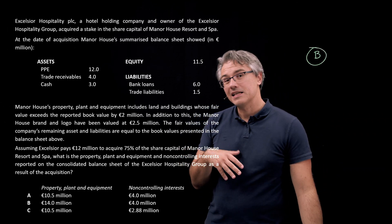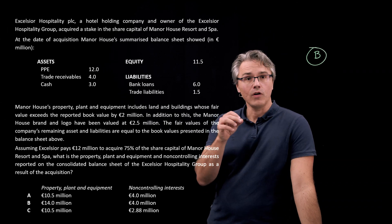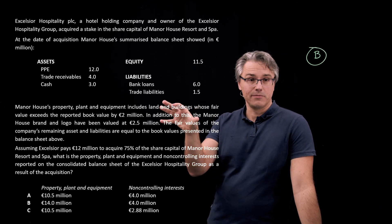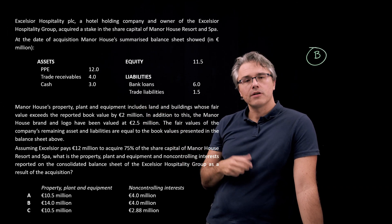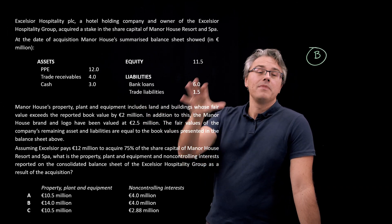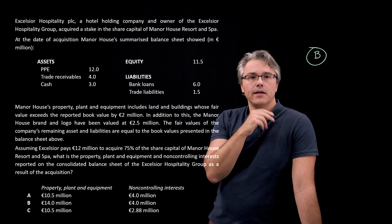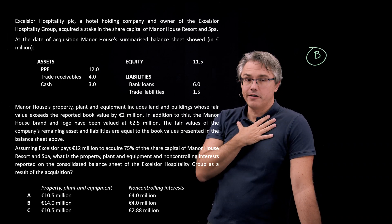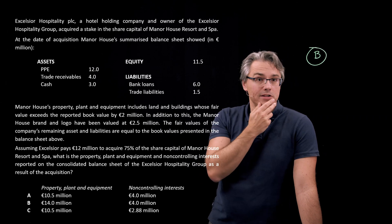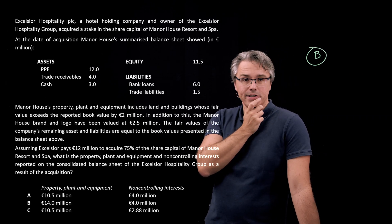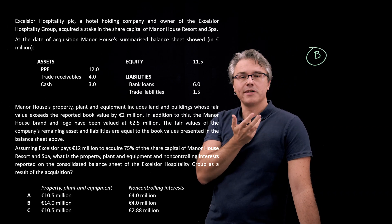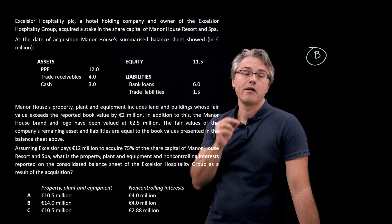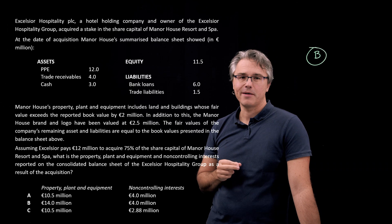Remember, non-controlling interest is the share of the net assets of the subsidiary, which we introduced to the balance sheet, into the consolidated balance sheet, but the share belonging to the other shareholders. Not us, we are the controlling shareholder, so there must be some non-controlling interests as well, which will always happen if we haven't acquired 100% of the share capital.